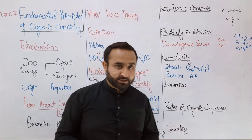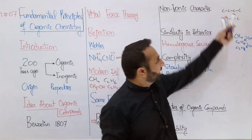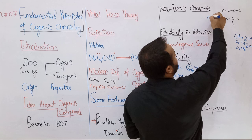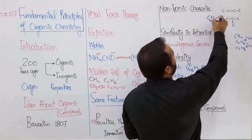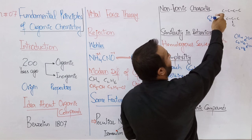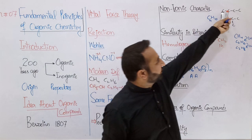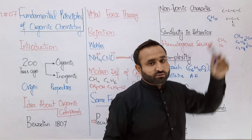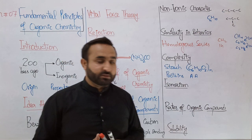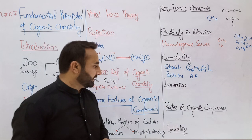Isomerism: molecules having the same molecular formula but different structures. For example, both normal butane and isobutane have the molecular formula C4H10 — calculating: 4×2=8 plus 2 = 10 — same molecular formula but different structures. Isomerism is very prominent in organic compounds.